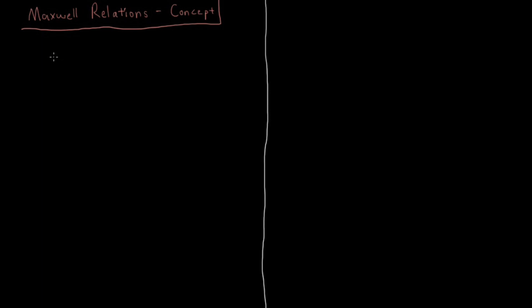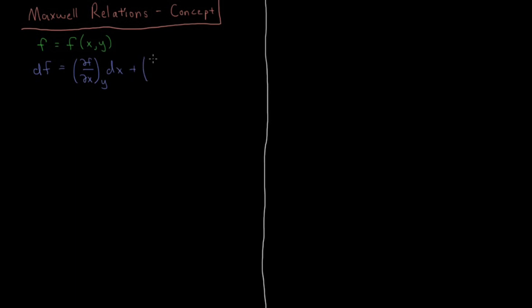Let's start with some review of multivariable calculus. Let's say we have a function f and that function depends on two variables x and y. If we want to write the total differential of f, df — some infinitesimal change in f — is equal to the partial derivative of f with respect to x at constant y times dx, plus the partial derivative of f with respect to y at constant x times dy. So any tiny change in x or y will add together to result in the total tiny change in f.